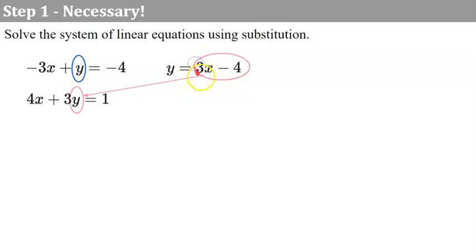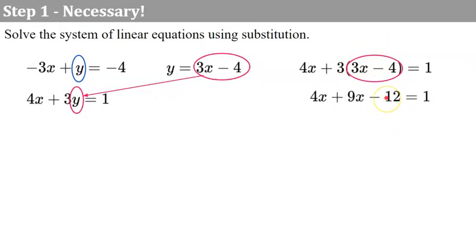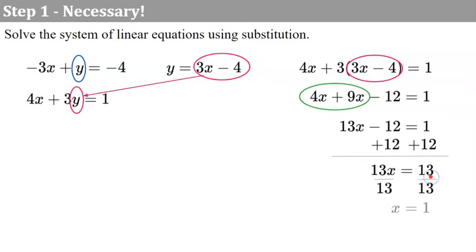Now I know that y equals 3x subtract 4, and I'm going to replace y in the second equation with that expression. So now I have 4x plus 3 times the quantity 3x minus 4. The next step is to distribute the 3: 3 times 3x is 9x, 3 times negative 4 is negative 12. Combining like terms, 4x and 9x are 13x, subtract 12 equals 1. Adding 12 to each side gives 13x equals 13. Dividing both sides by 13, x equals 1.